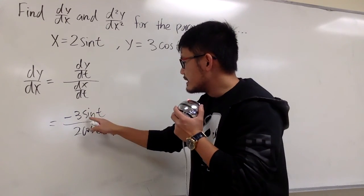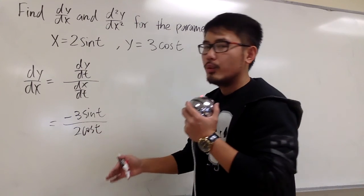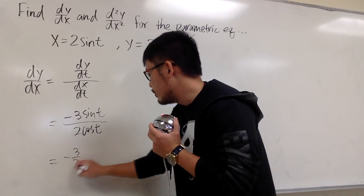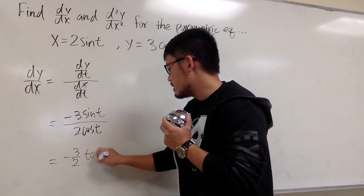And then, of course, sin t over cos t, we can write that down as tangent. This is negative 3/2 tangent t.